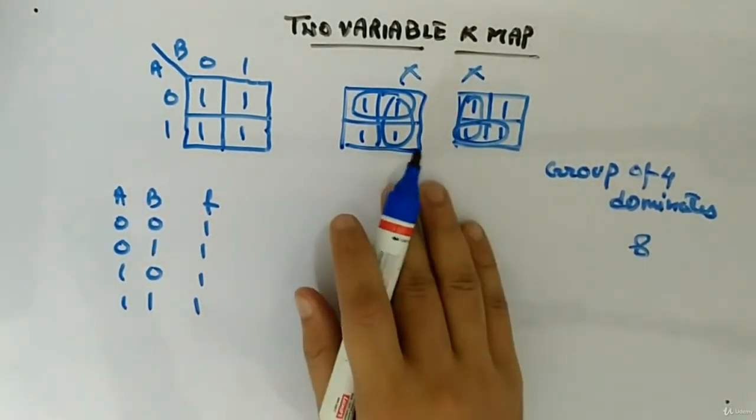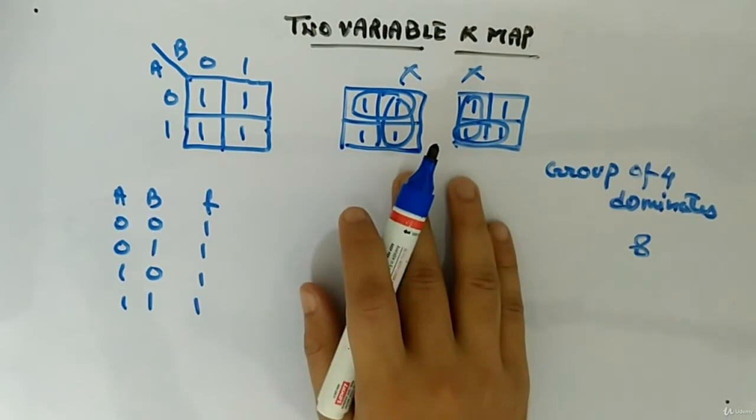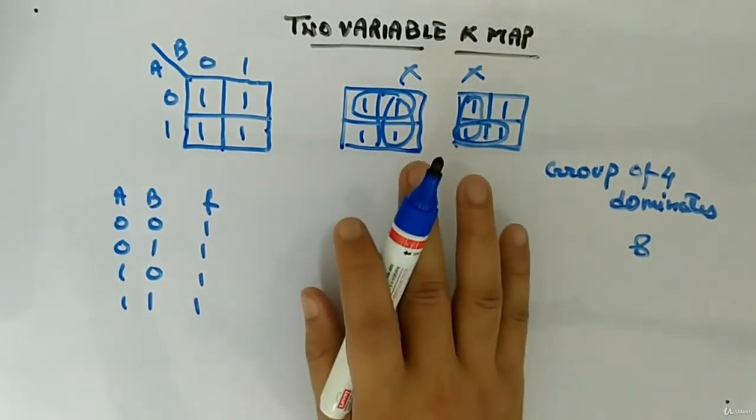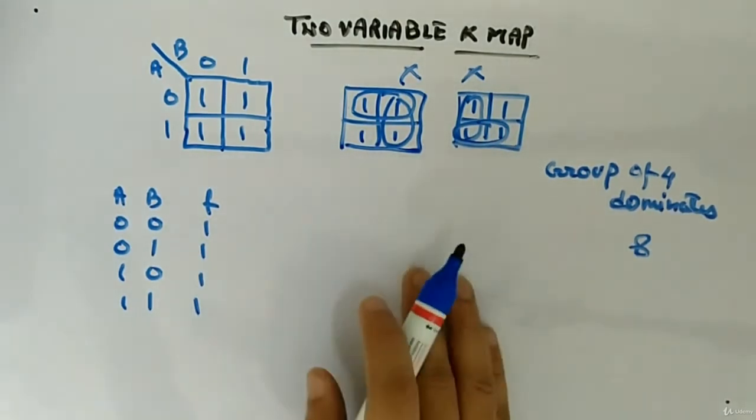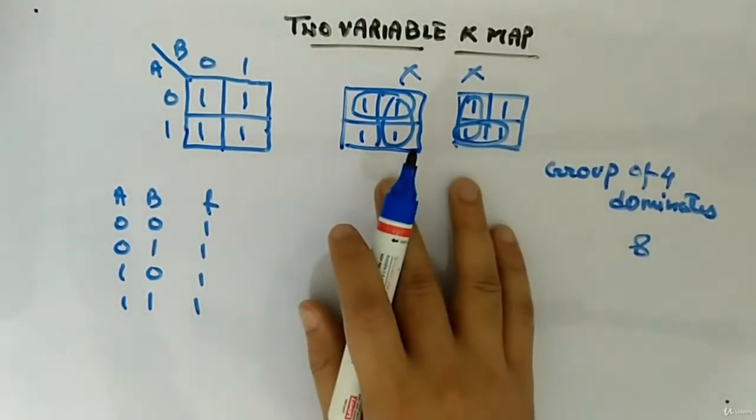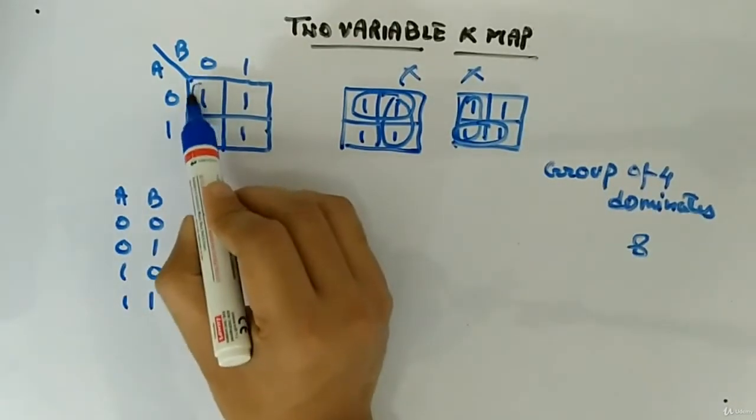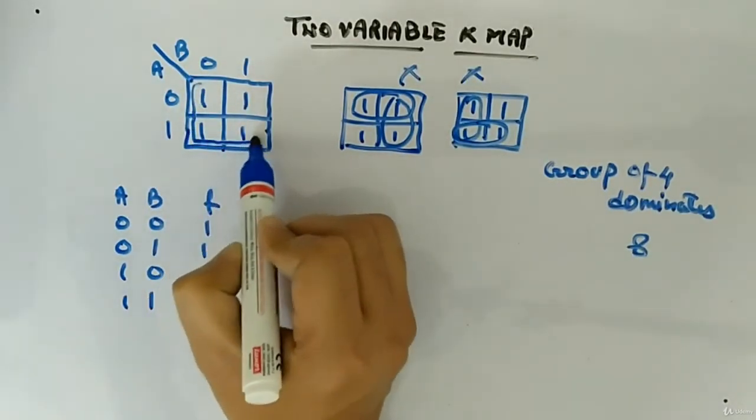This is possible, but this won't give you the minimized function. You will still have to do some minimization after writing the function. Here, hence this is valid but it is not allowed, because there is a group of four which is possible. These four.